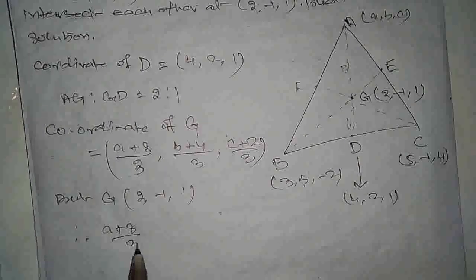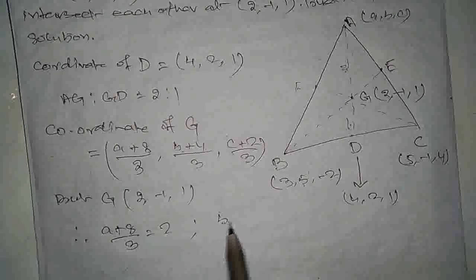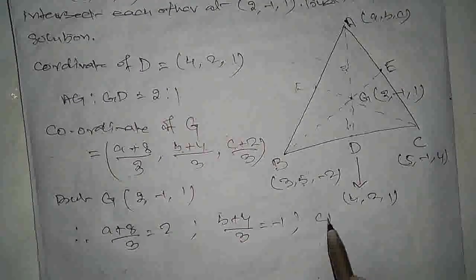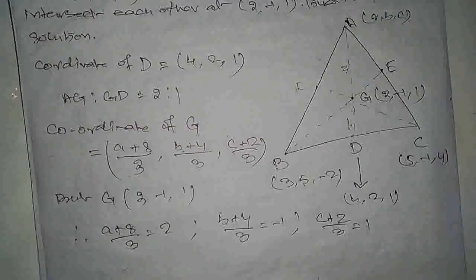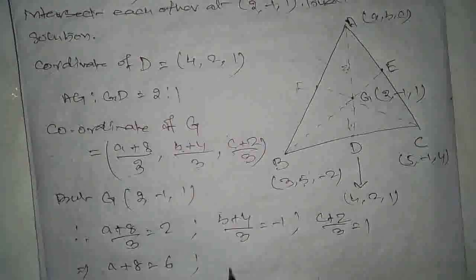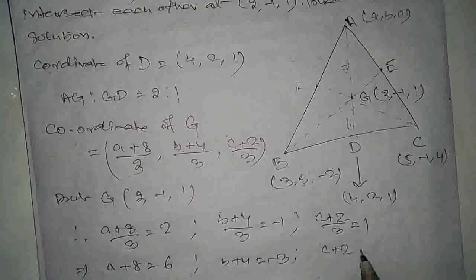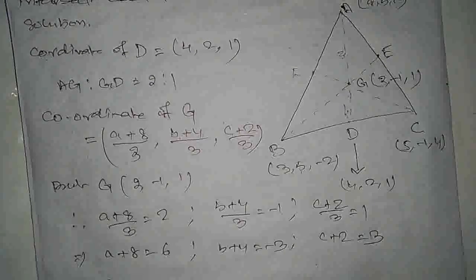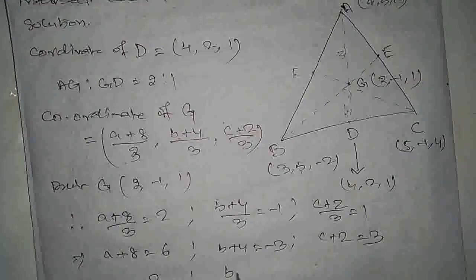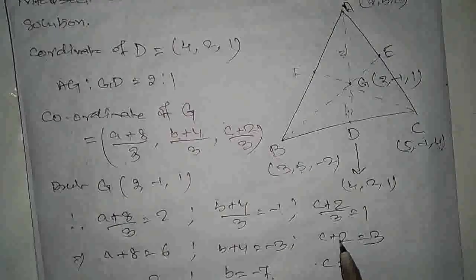Therefore: (A+8)/3 = 2, so A+8 = 6, implies A = 6-8 = -2। (B+4)/3 = -1, so B+4 = -3, implies B = -3-4 = -7। (C+2)/3 = 1, so C+2 = 3, implies C = 3-2 = 1।